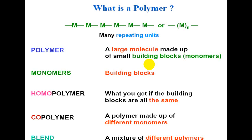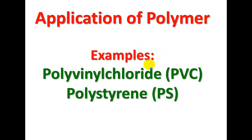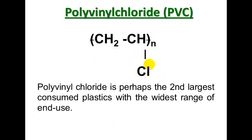A copolymer is a polymer made up of different monomer units — combining more than one type of monomer. Blends are a mixture of different polymer units combined together. Our today's discussion is confined to polyvinyl chloride (PVC) and polystyrene (PS), which we will discuss one by one.